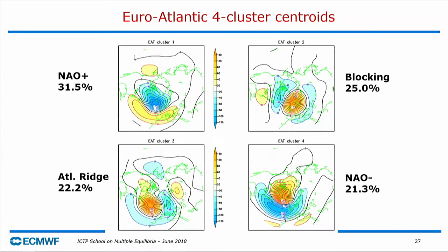For the Atlantic — no surprise — I find the same four regimes as everybody else. These are the mean anomalies. In this particular sample, the most populated is the positive NAO. Then you have the blocking. Then you have the Atlantic ridge, very similar to the negative NAO. This is just for the Atlantic domain.